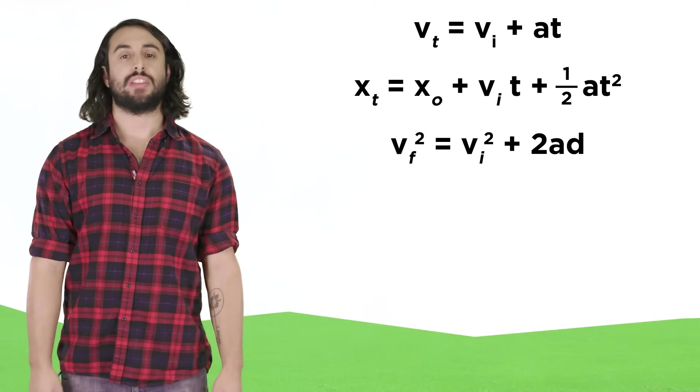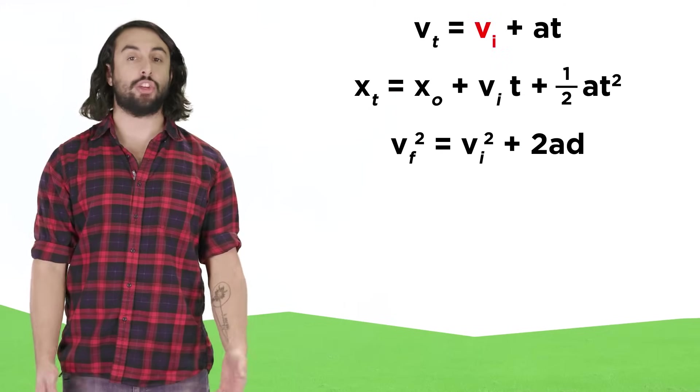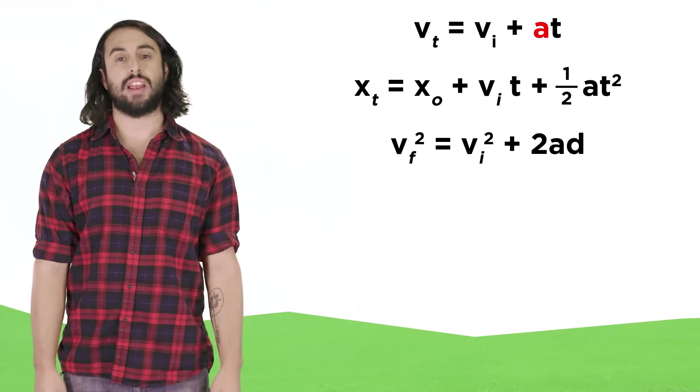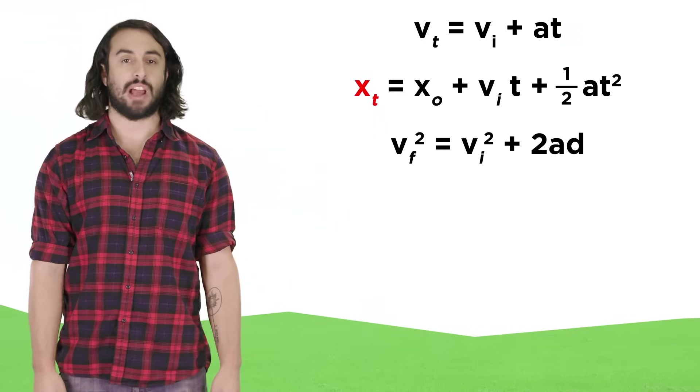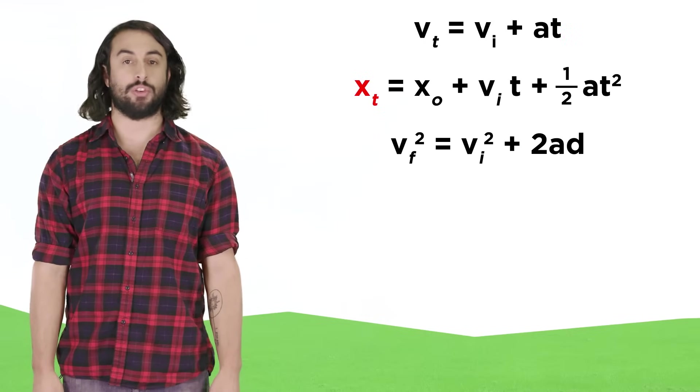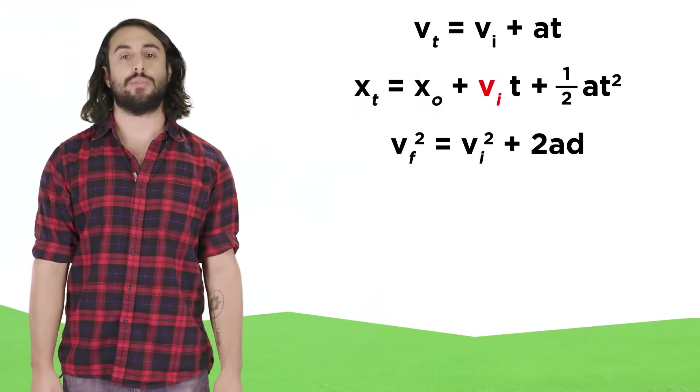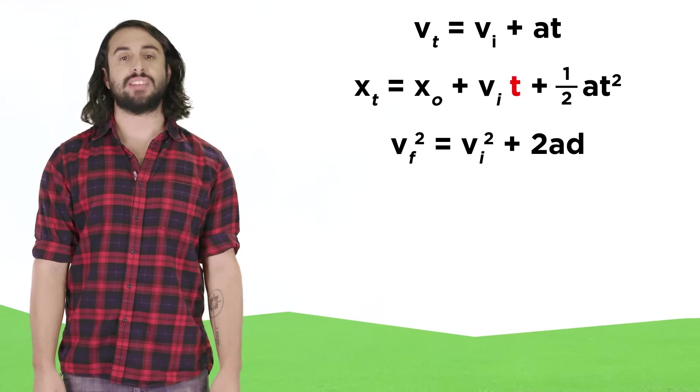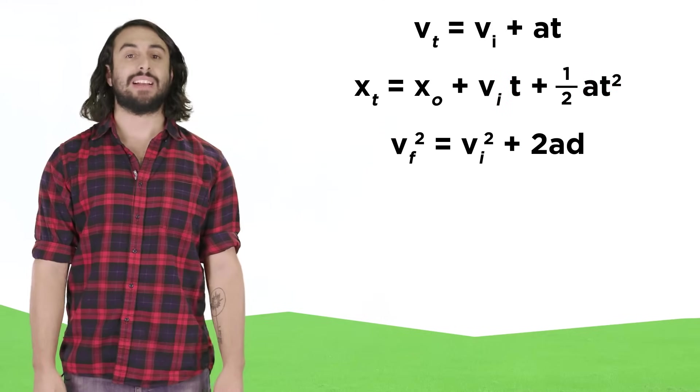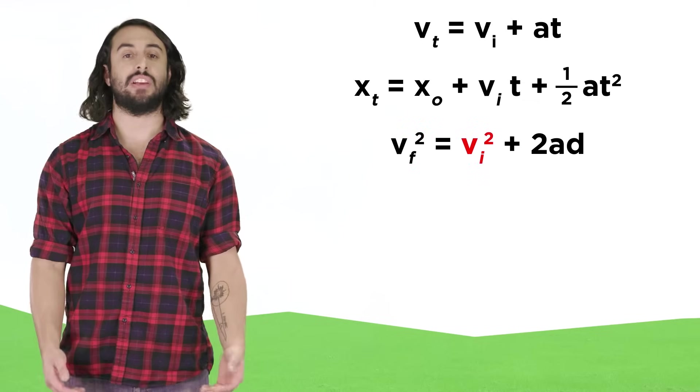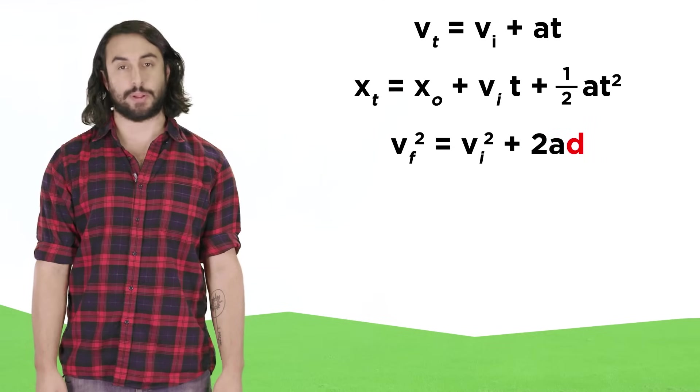The first one says that the velocity of an object at any time t is equal to the initial velocity plus the acceleration times time. The next one says that the position of an object with respect to a point of origin will be equal to its initial position plus the initial velocity times time, plus one half the acceleration times time squared. Lastly, this one says that velocity squared is equal to the initial velocity squared plus twice the acceleration times the displacement.